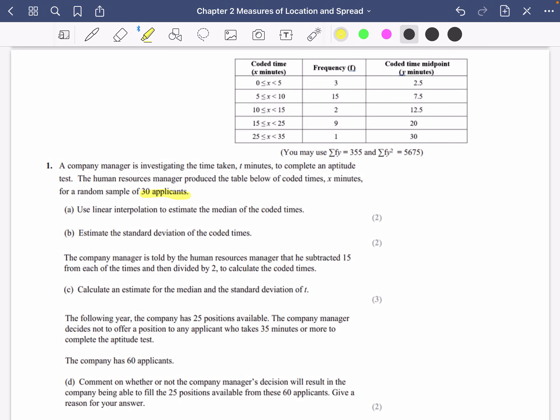First of all, we want to use linear interpolation to estimate the median of these coded times. So let's just go ahead and do that nice and quick. We're going to do the cumulative frequency down here. So it's going to go 3, 18, 20, 29 and 30. So we know that for the median, we're going to say it's 30 divided by 2, which is the 15th. So I'm going to do that same process as before. The 15th one is going to be somewhere inside of this group that we've got here. So it's taking us from the third to the 18th. We're looking for the 15th and that group takes us from 5 to 10.